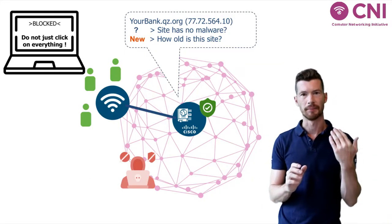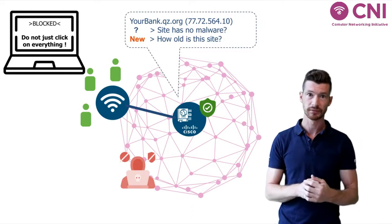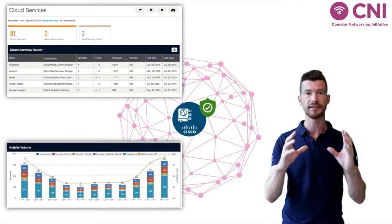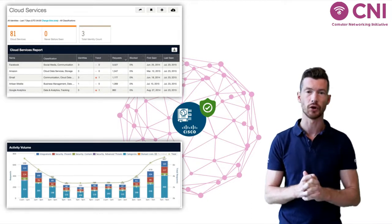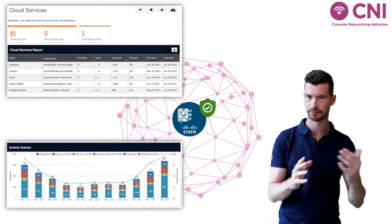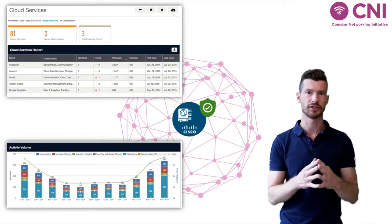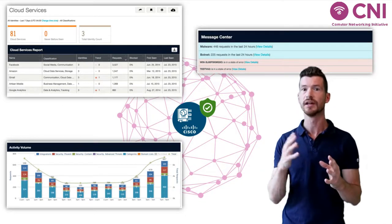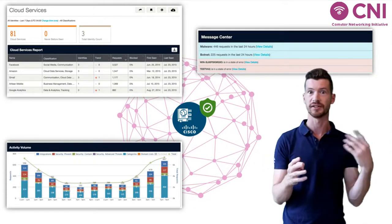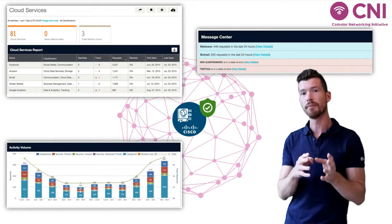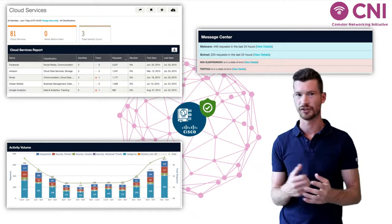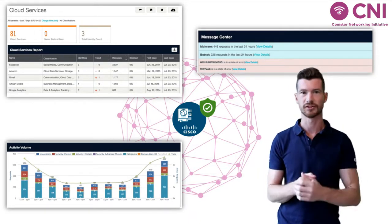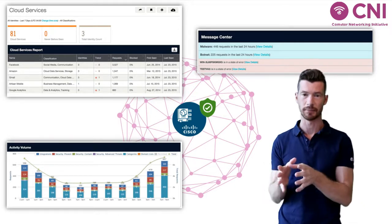Another interesting thing about security products is the visibility portion. Within the Umbrella dashboard, you can see all the connections that have been made — and importantly, all the connections that have been blocked, and by what sources to what destinations. So you can go back to your network and try to clean up all the sources that have been making malicious connections to malicious destinations.